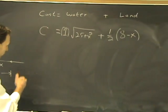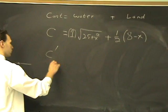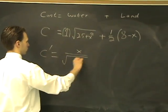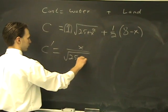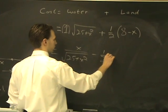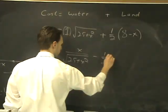We figure it out with critical numbers. The minimum must occur at either endpoints or critical numbers, so we take the derivative of our function. C prime equals x over square root of 25 plus x squared minus 1 half. That's C prime. One critical number to make it 0.